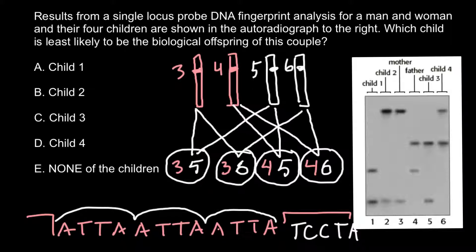Now we can easily solve our problem. Looking at the autoradiograph, we focus on the bands of the mother and of the father. The mother has two bands — one here and one here. The father also has two bands. Let's examine the first child: the first child has a combination of one of the mother's alleles and one of the father's alleles. This tells us the child has a variable number of tandem repeats that differs between the two bands.